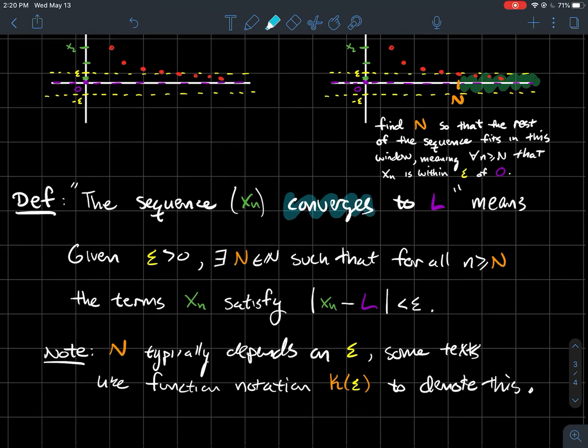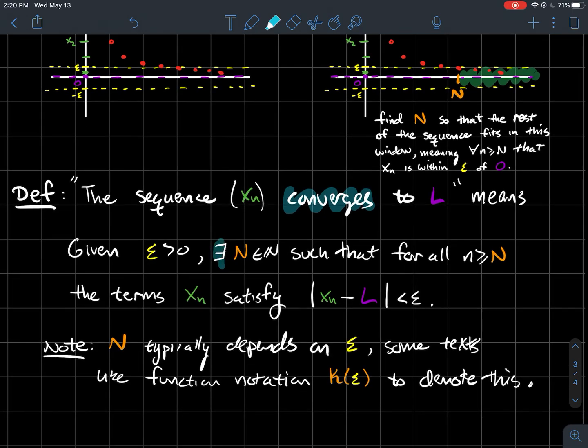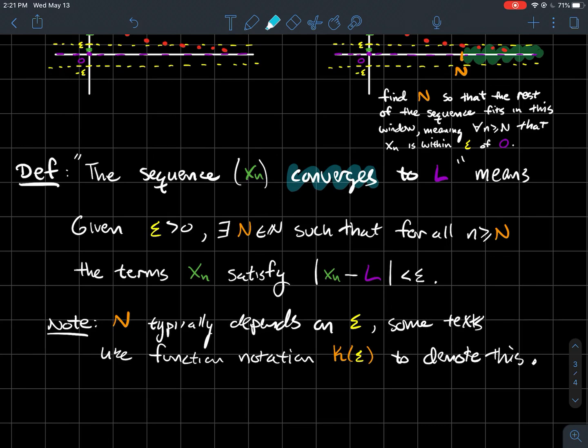So some things to note from this. That N usually depends on what epsilon is. And so some texts will try to emphasize that relationship by using function notation. Instead of N, they'll write k of epsilon, a natural number, to denote that. For any epsilon someone gives you, it would be your job to find an N. In other words, tell me how far out in the sequence you need to go to ensure that the points are within epsilon of the limit.